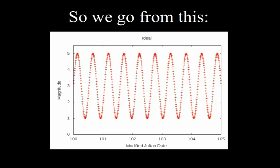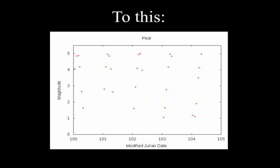So we went from this perfect sine curve, where it's really easy to figure out the period, so the amount of time between one peak and another peak, and the amplitude, so the distance from the top to the bottom of the peak. You can figure it out very easily just by looking at this plot.